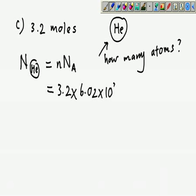So this calculation will give you 3.2 multiply 6.02 equals 1.93 times 10 to the 24.